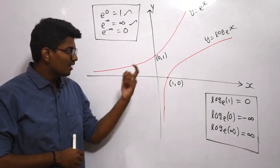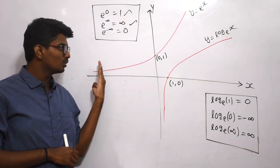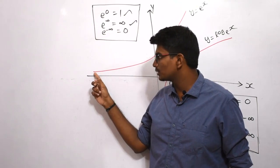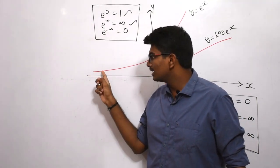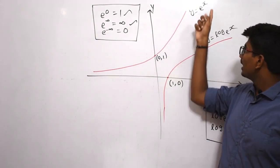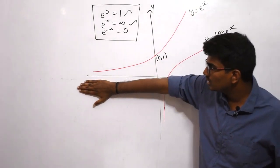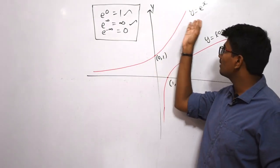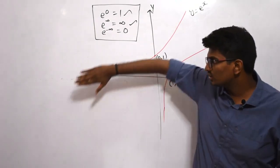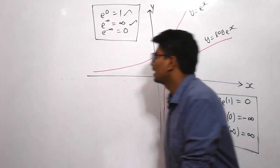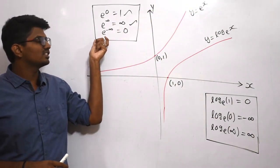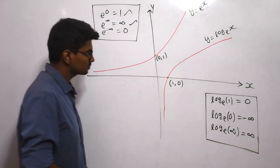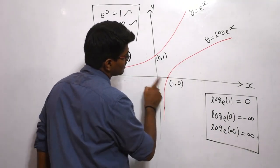Now see about minus infinity. When x is tending to minus infinity — as we keep on moving towards negative — the exponential curve is not exactly touching the x-axis, but it is tending to touch the x-axis. This means when x keeps on moving towards negative infinity, the y value is trying to touch 0, trying to touch the x-axis which is y equals 0. So e to the power of minus infinity equals 0.